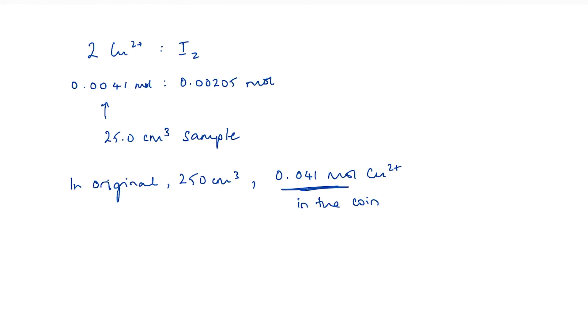Now, the question asks us to find the percentage mass of copper in this coin. So I need to convert moles into mass. So the mass of copper in the coin is going to equal moles times the molar mass of copper. So we've got 0.041 times 63.5. It's really important that you always take your molar masses direct from the periodic table off the datasheet of the exam. Don't round up. So that comes to, when you plug it into your calculator, 2.6035 grams.